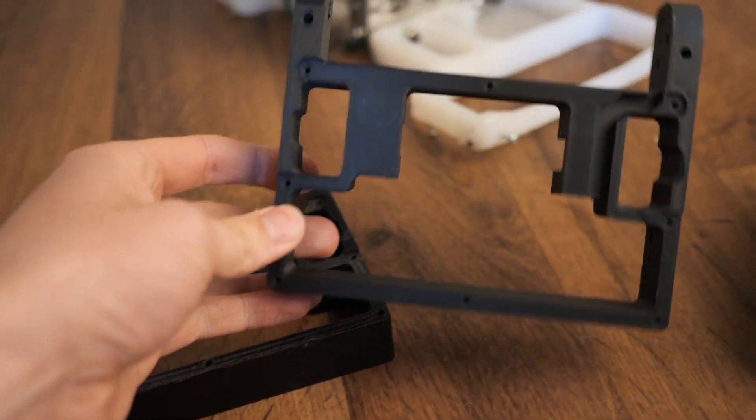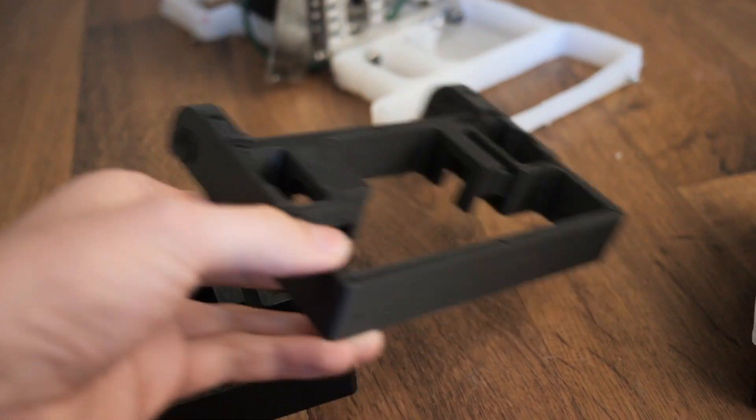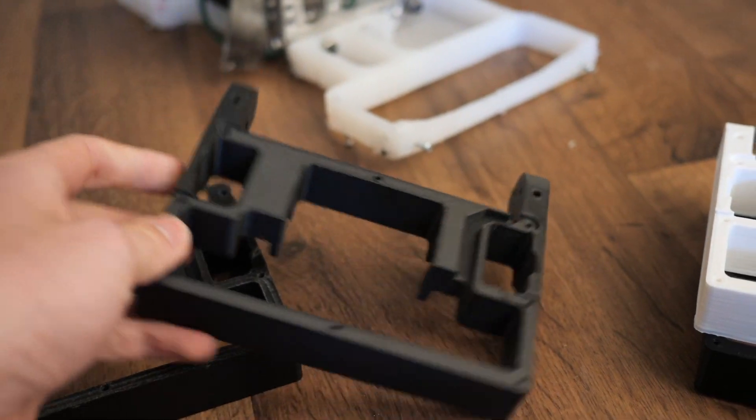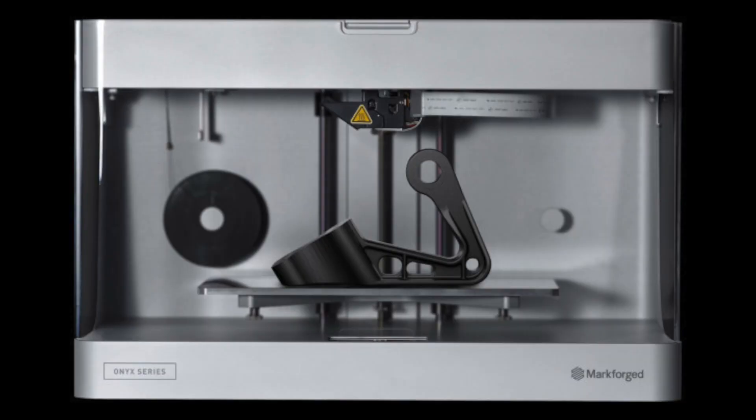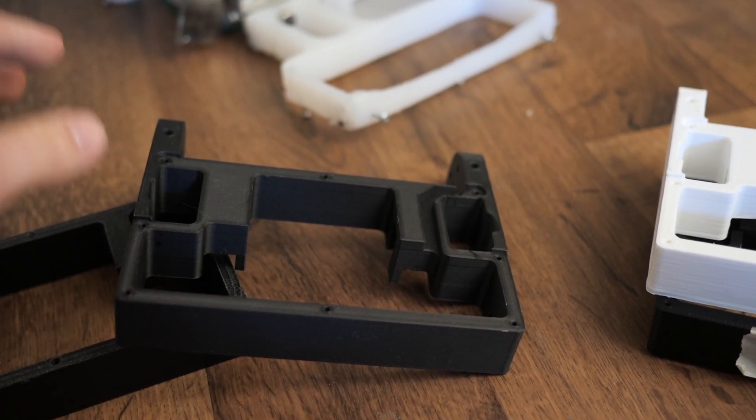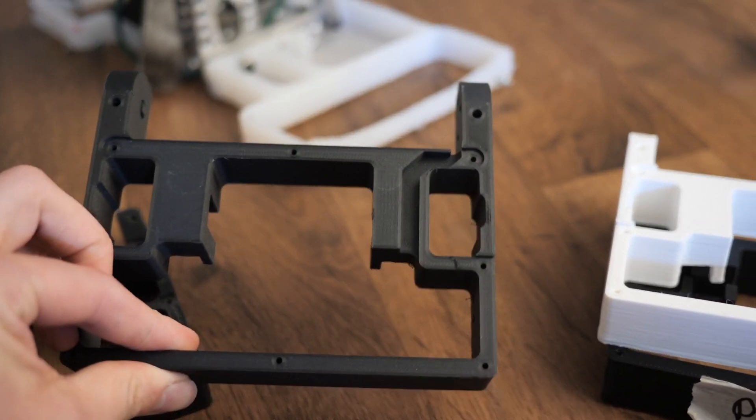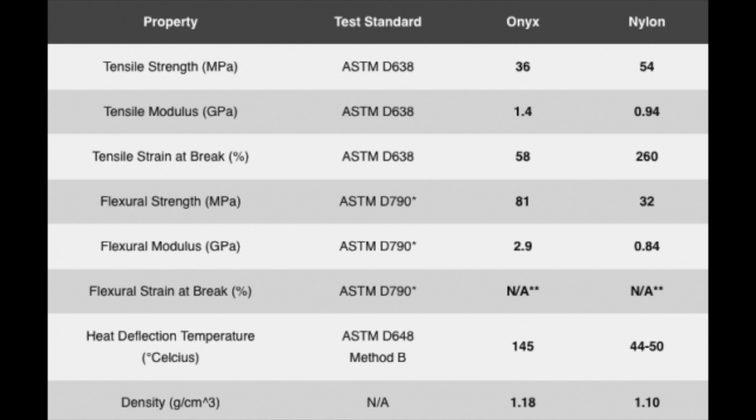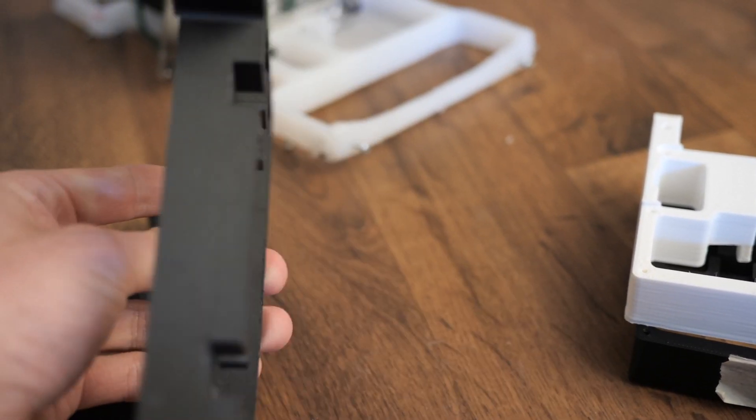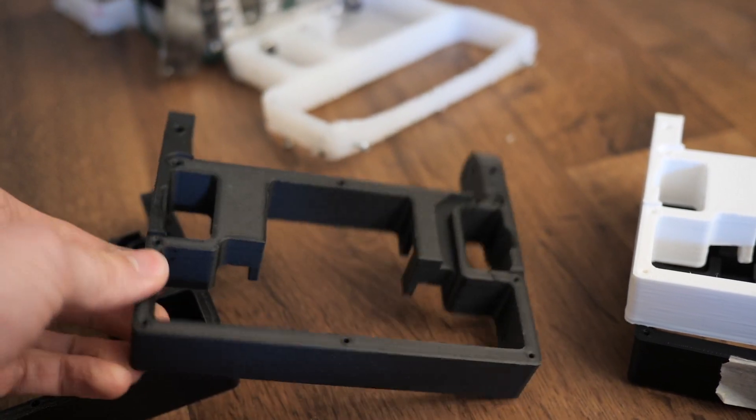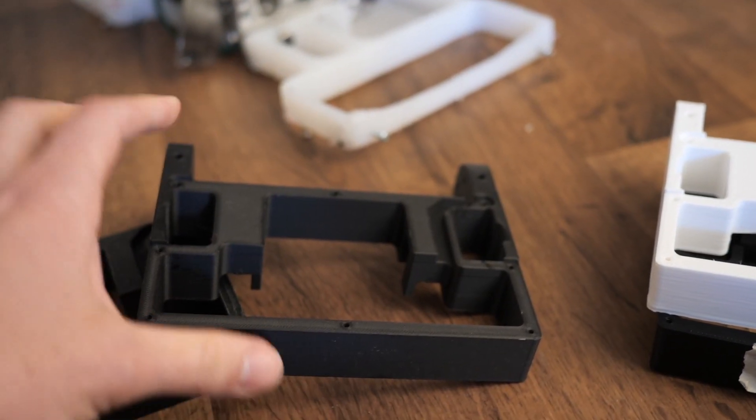Next up is a Markforged print. If you don't know the company called Markforged, they do very high quality FDM prints that have high strength. So it's a nylon print with carbon fiber infill to increase the stiffness. So it's a little bit stiffer than a regular nylon print, but like most nylon prints, it'll be very impact resistant.